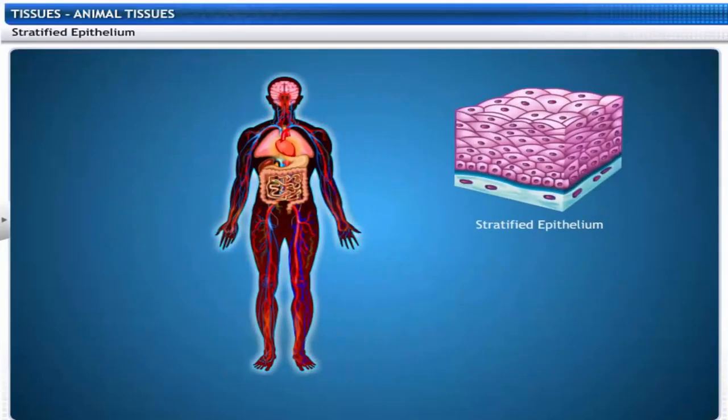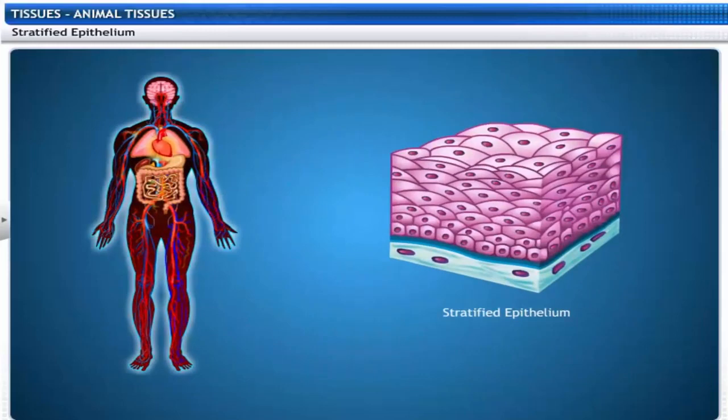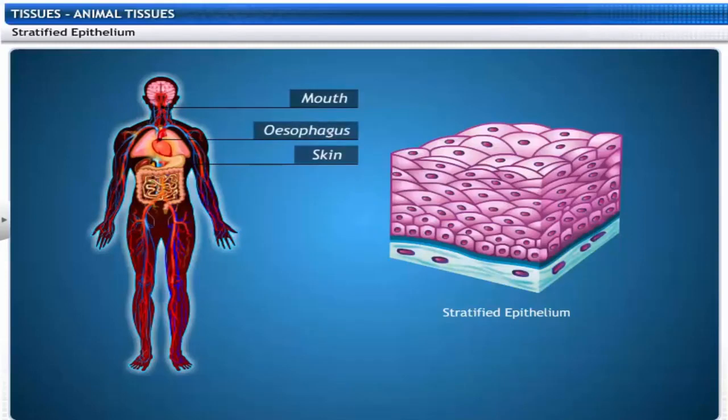Stratified epithelium may have the same or different kinds of epithelial cells. Cells line up one over the other to form stratified epithelium. It is found in places of wear and tear like the epidermis of the skin, lining of the mouth cavity, and esophagus.